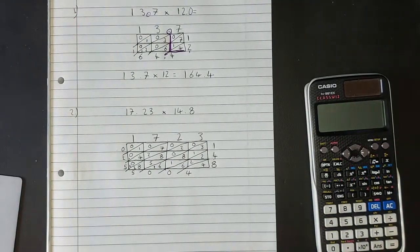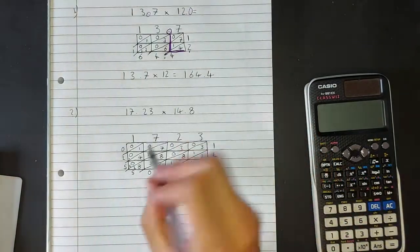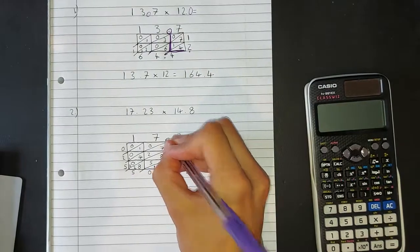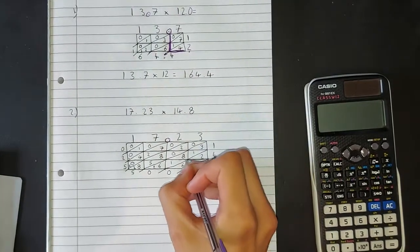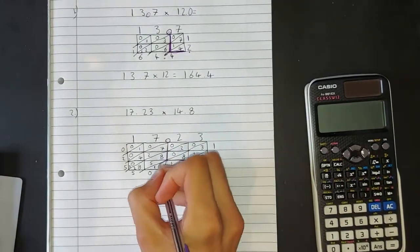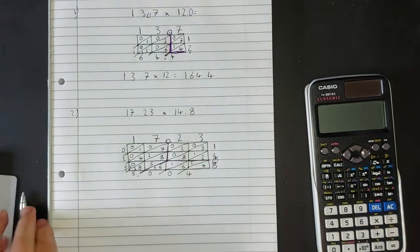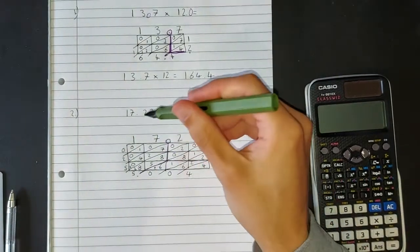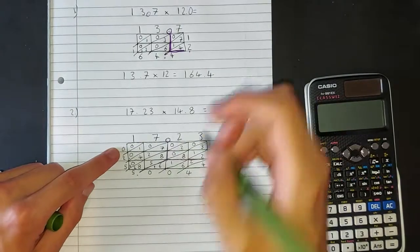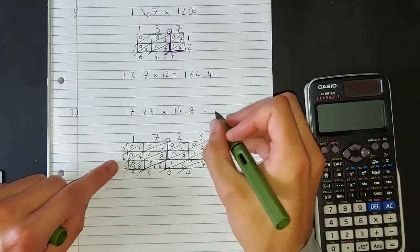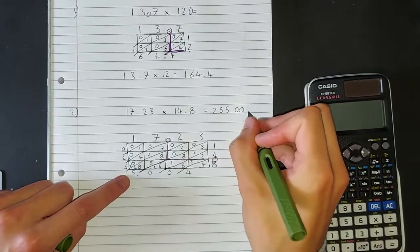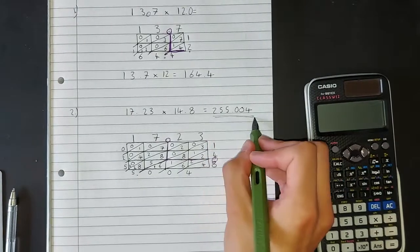So let's have a look where our decimal is going to be. We have 17.23, 14.8, so our decimal is here and our decimal is here. We're going to look at where they cross, follow that diagonal down and this is where your decimal is going to be. So the answer to this question to 17.23 times 14.8 is, we don't need to include that first zero because we don't have any thousands, so it's going to be 255.004. There's a deal. Thank you.